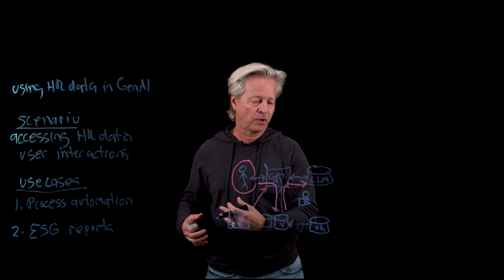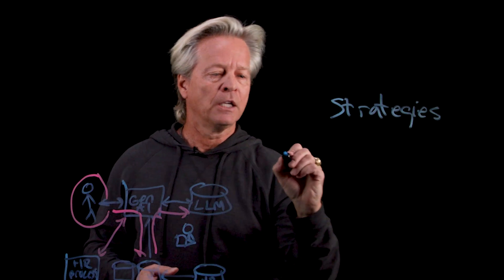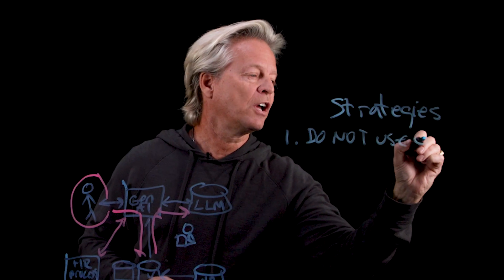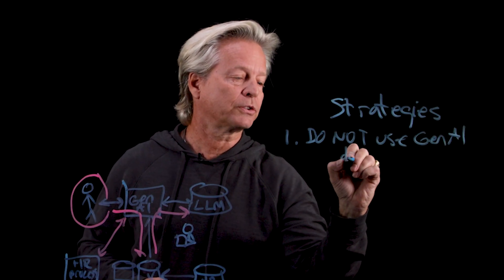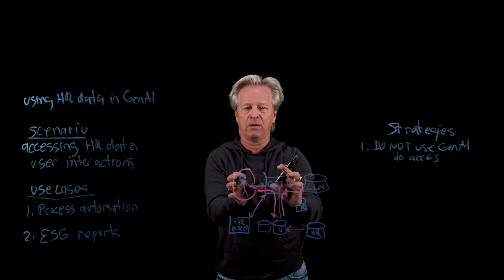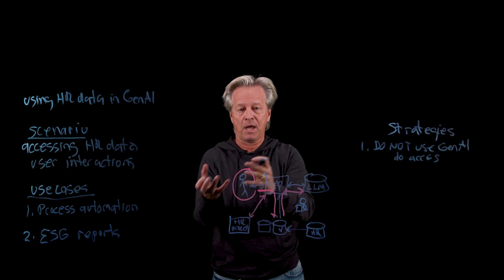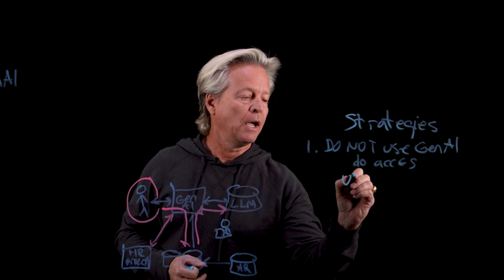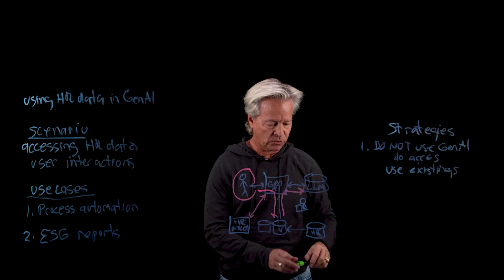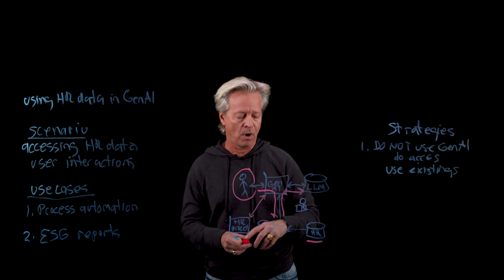Now let's look at some strategies on how to actually manage these. The first strategy is: do not use the Gen.AI system to do controls or to do access. When a user is interacting, we don't want the Gen.AI system to actually determine what the user can or cannot see in the HR data. What we really want to do is use the existing controls that are already in place and leverage those. The controls exist in the source data systems themselves.